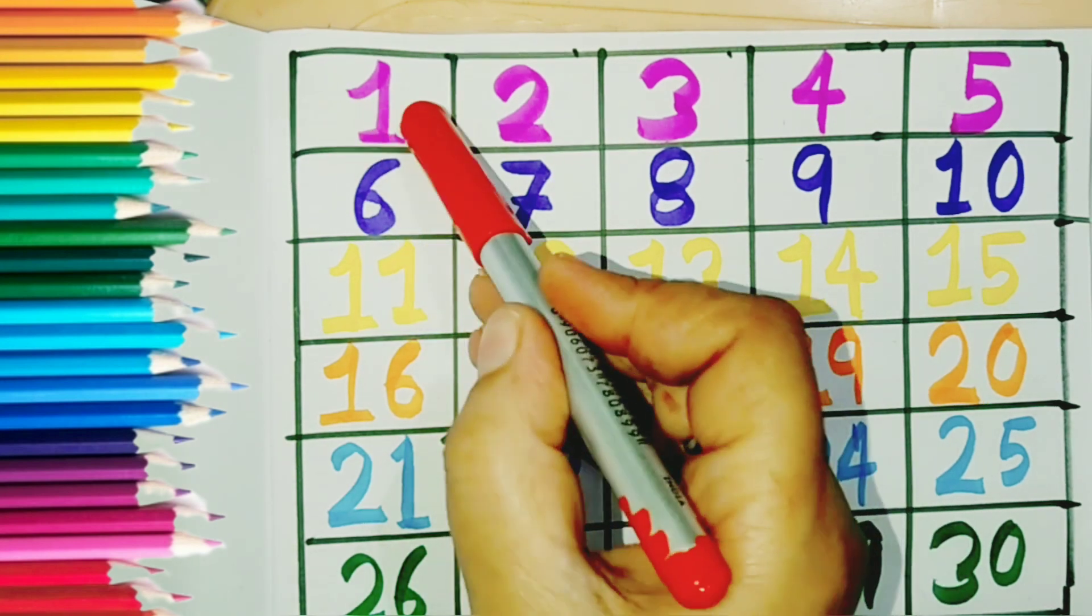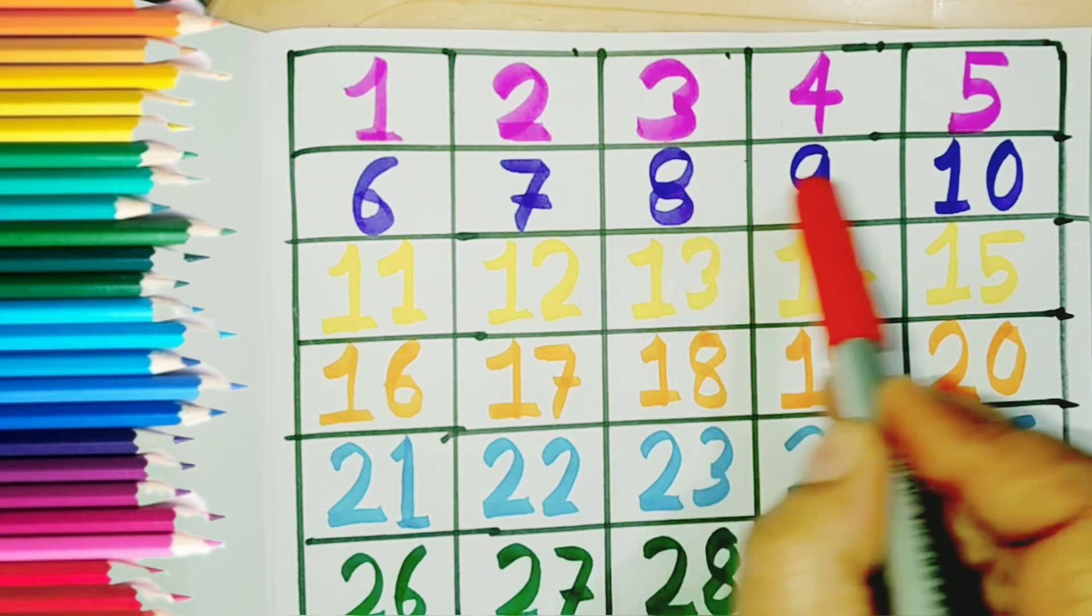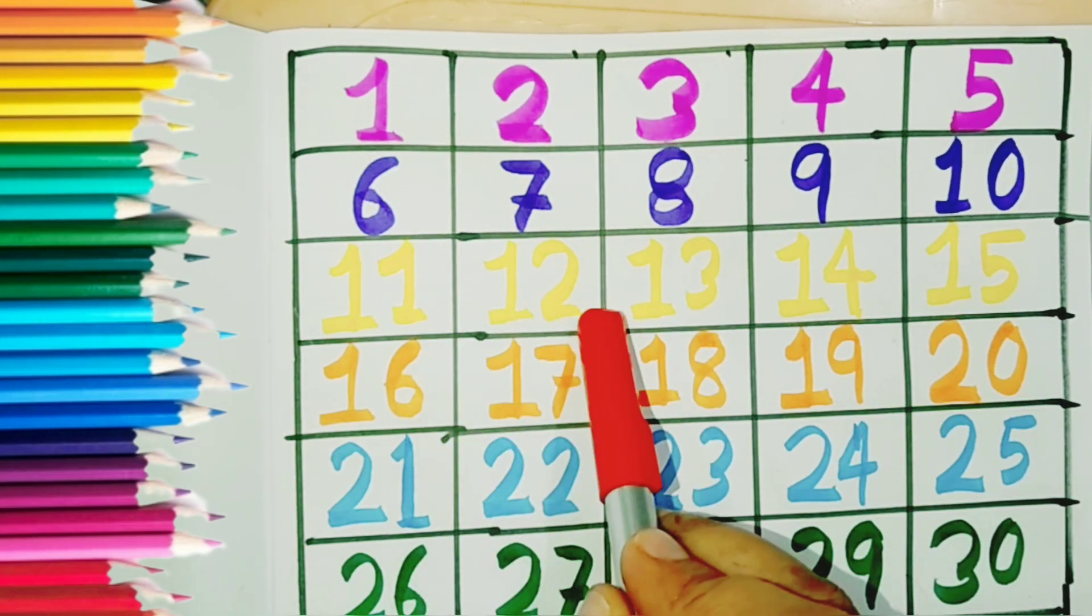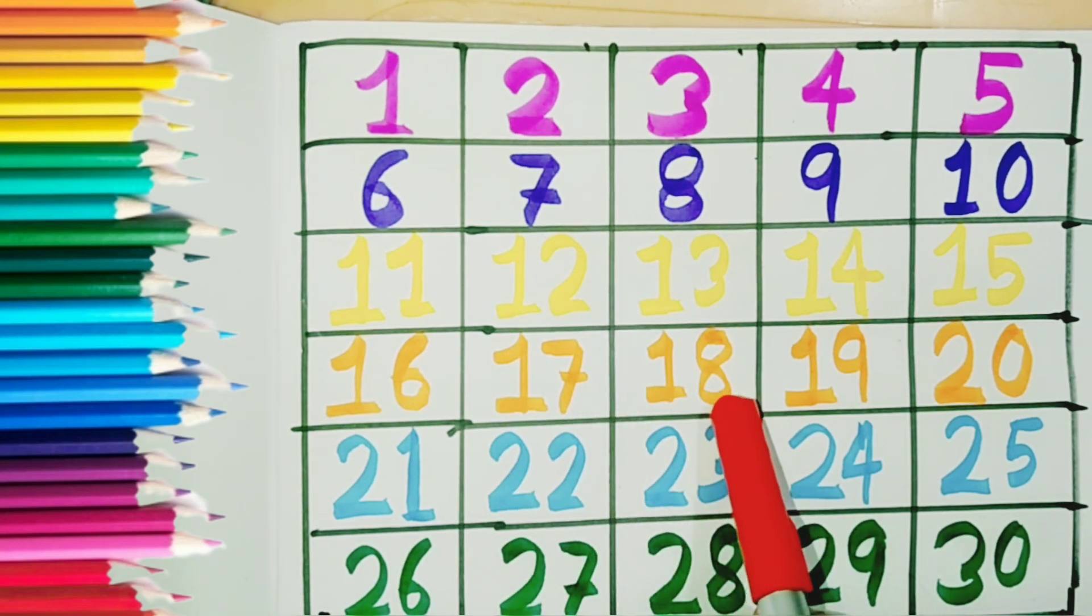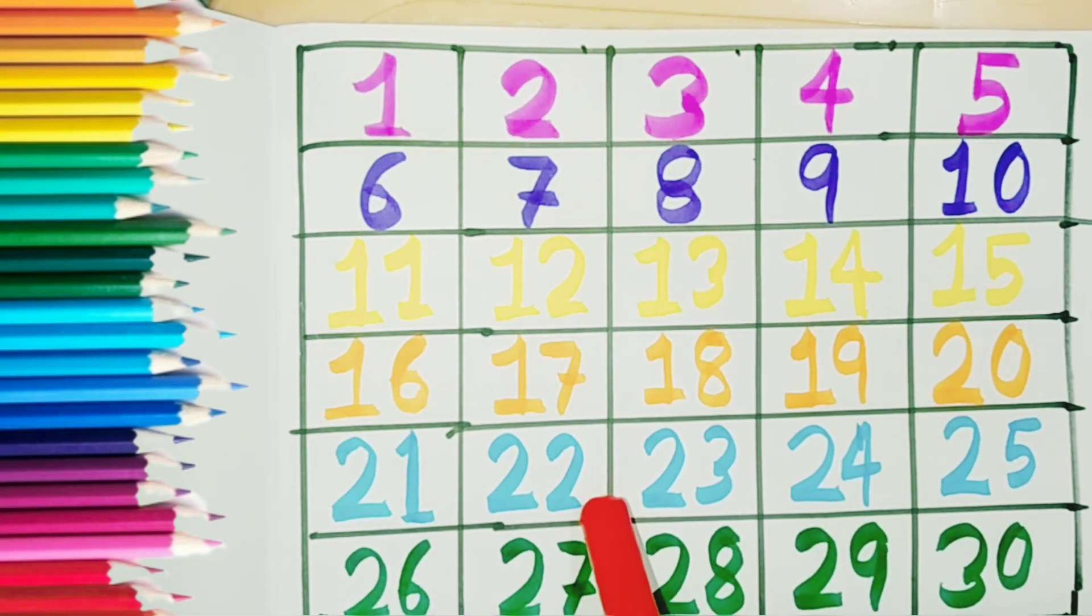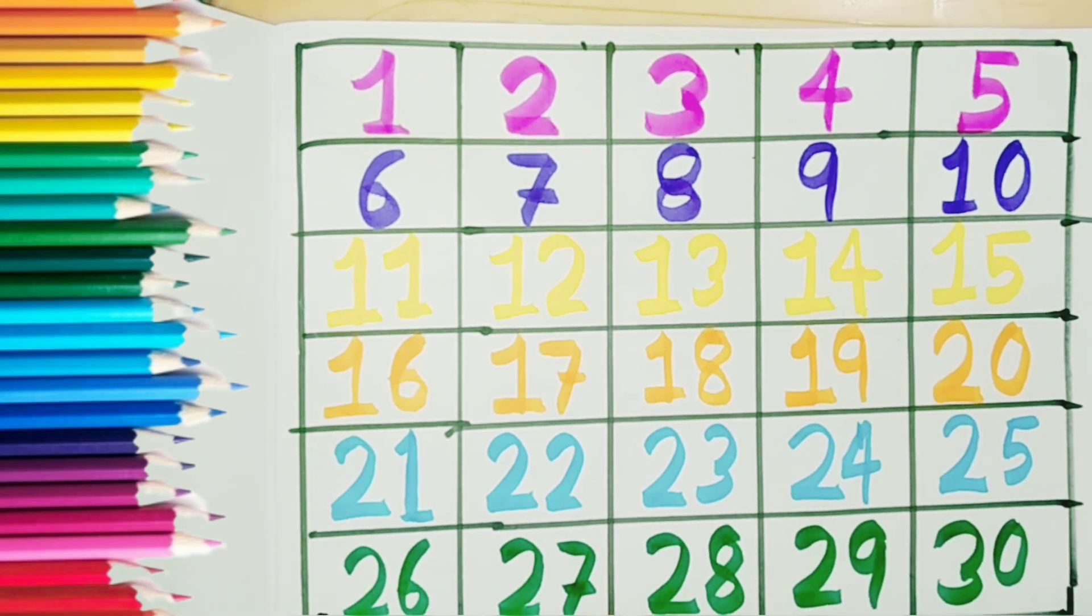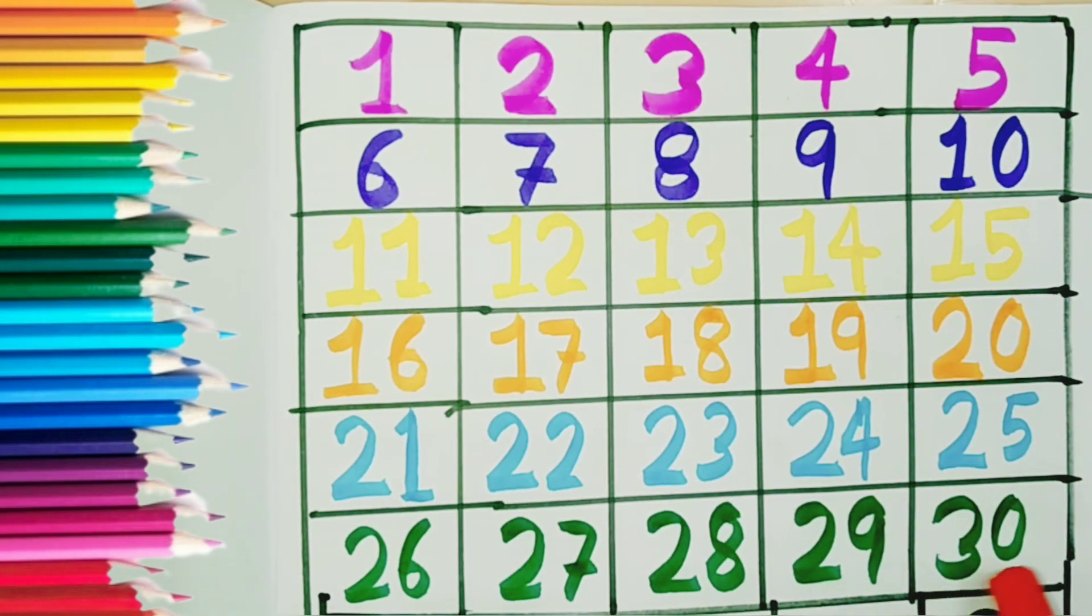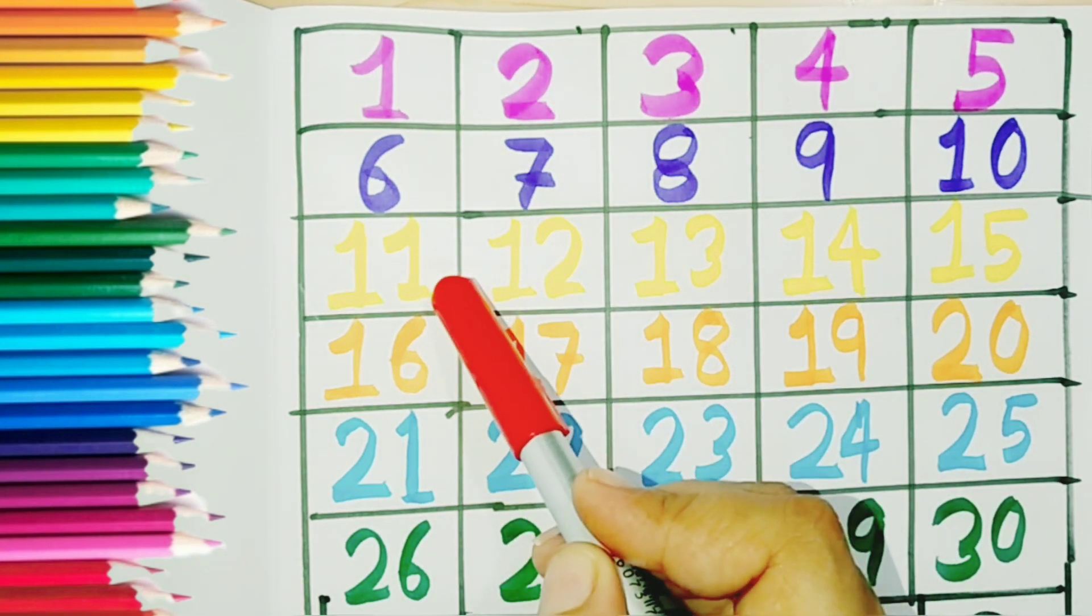Let us learn: one, two, three, four, five, six, seven, eight, nine, ten, eleven, twelve, thirteen, fourteen, fifteen, sixteen, seventeen, eighteen, nineteen, twenty, twenty-one, twenty-two, twenty-three, twenty-four, twenty-five, twenty-six, twenty-seven, twenty-eight, twenty-nine, thirty. Pink color, indigo color, yellow color, orange color, sky blue color, and deep green color.